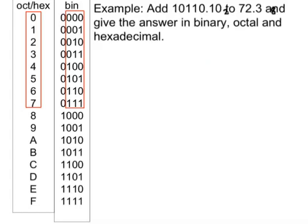Now let's do this example: add 10110.10 base 2, which is a binary number, to 72.3 base 8, an octal number. You're asked to give your answer in binary, octal, and hexadecimal. I can only add these two numbers when they're in the same base, so firstly I'm going to convert 72.3, the octal number, into binary.